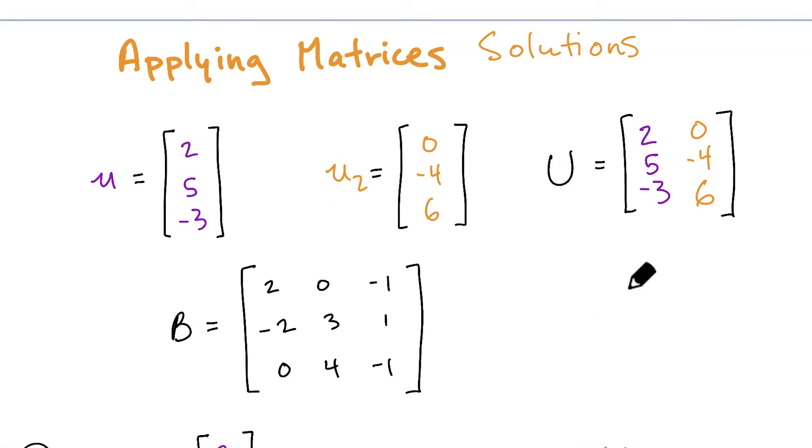All right, to assist you with understanding what's happening here, I've color-coded our two vectors u and u2. So the vector u I've color-coded in purple, and u2 I've color-coded in orange. So later when we start talking about the matrix u, you can see clearly it consists of those purple and orange columns representing the vectors u and u2 respectively.